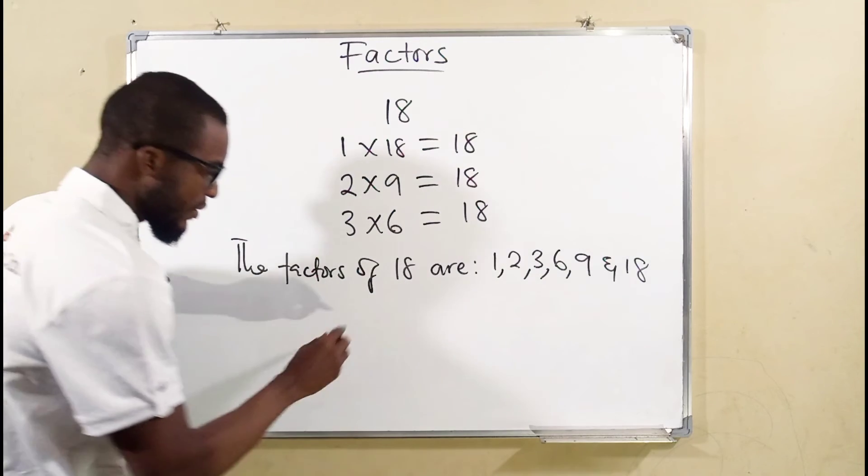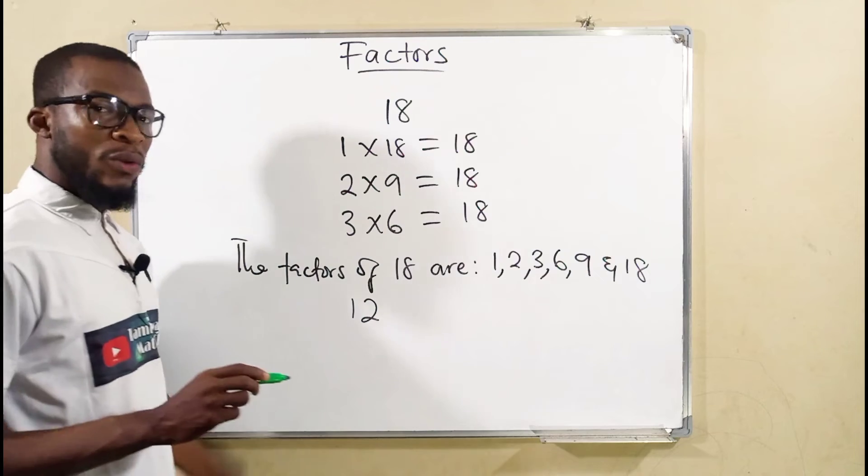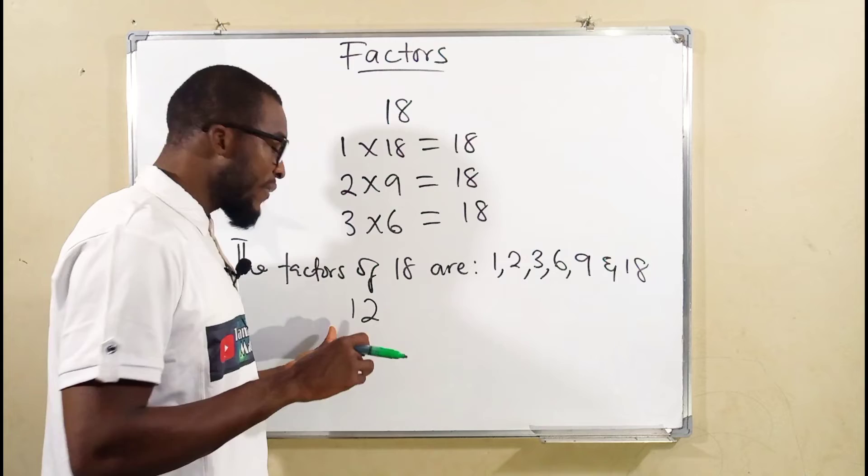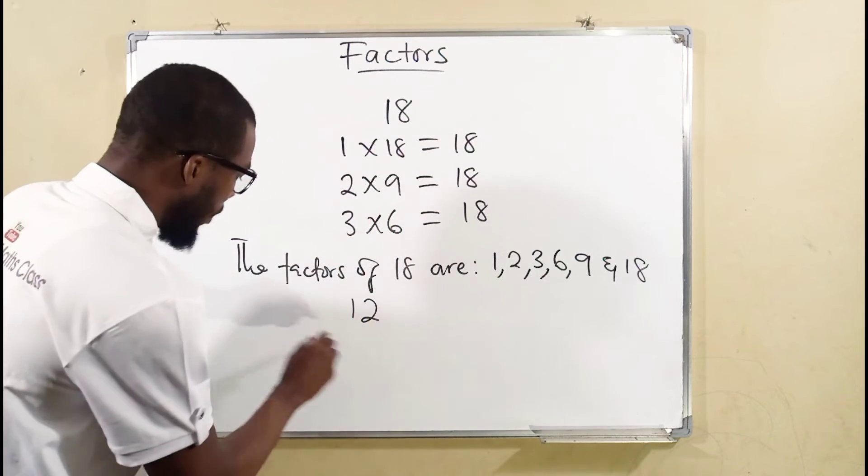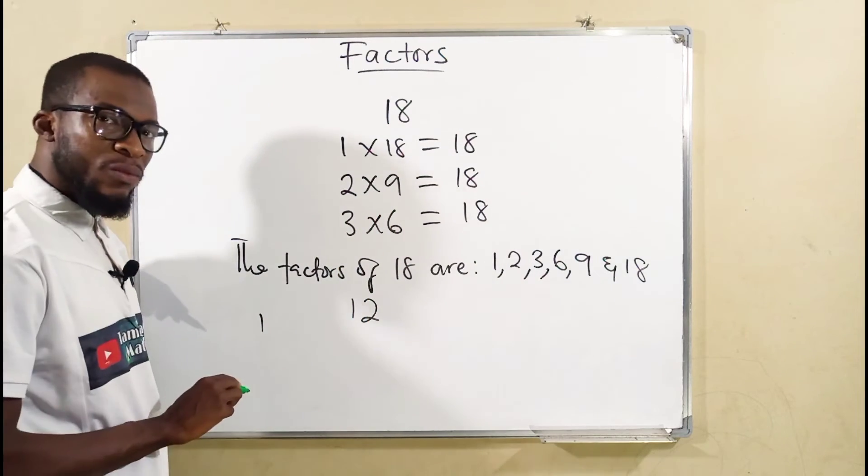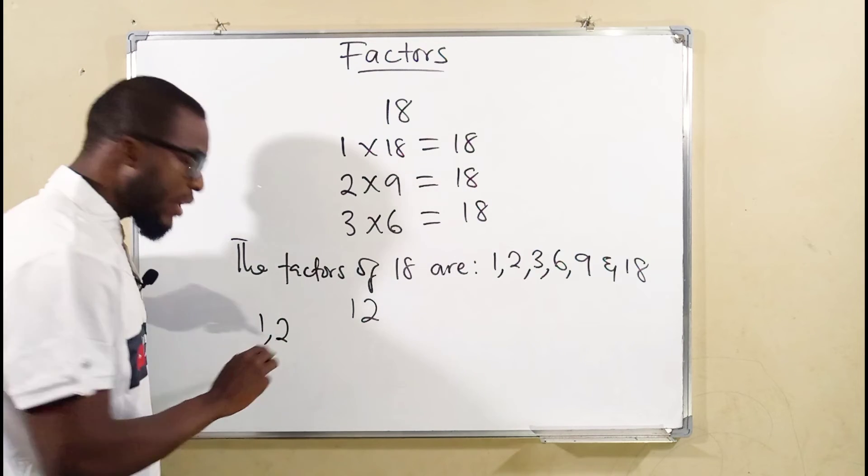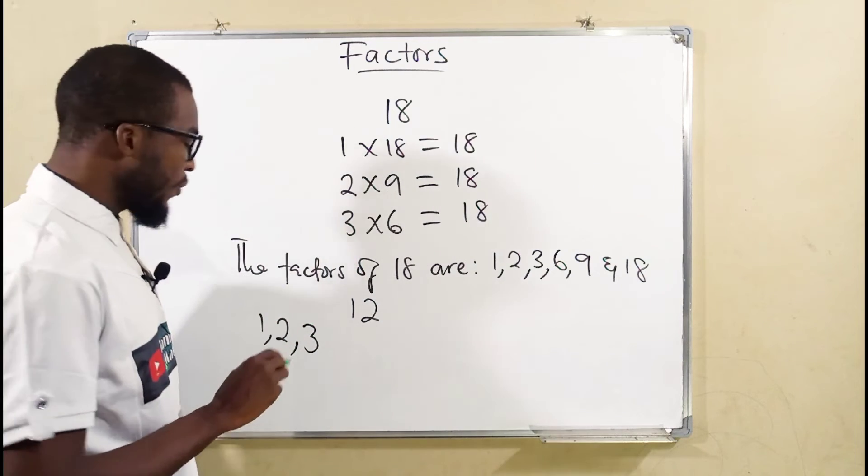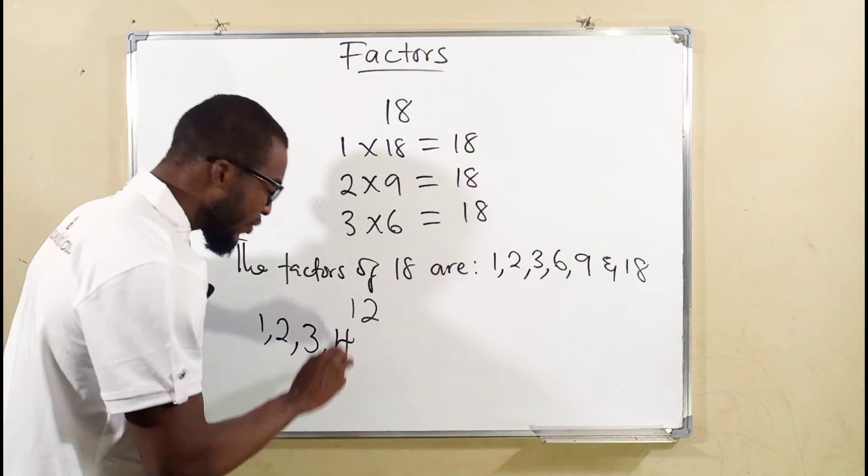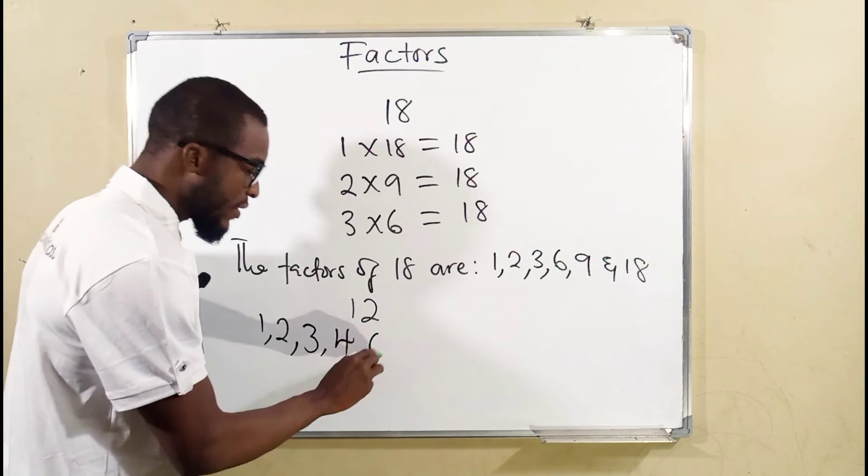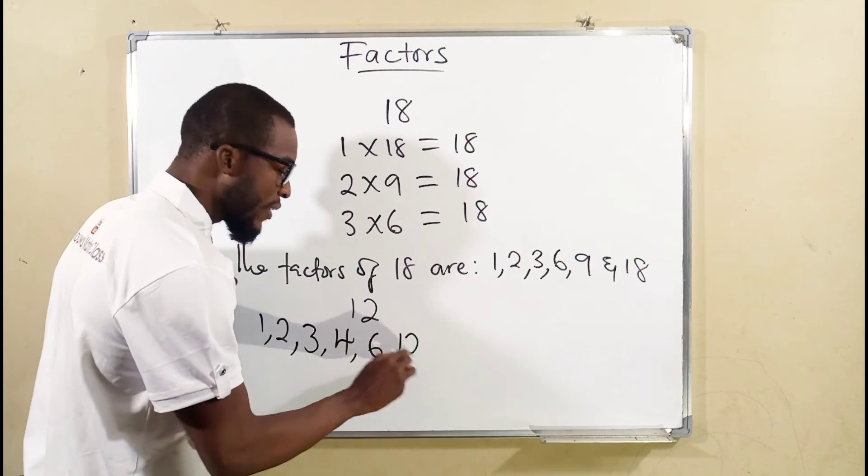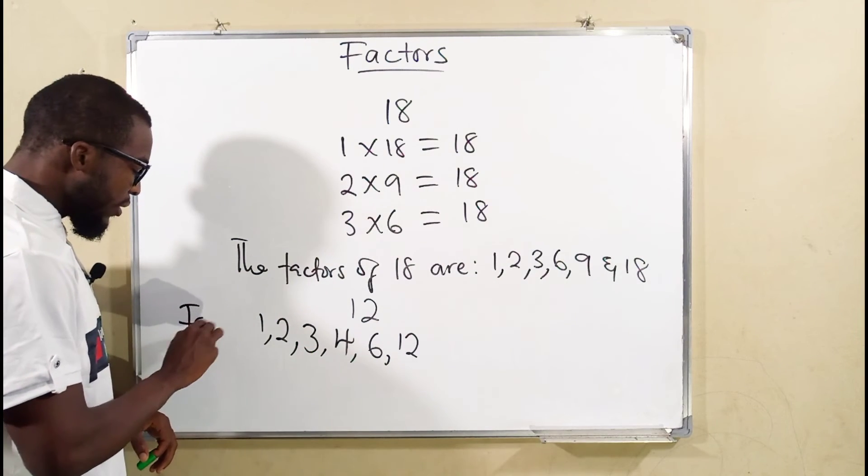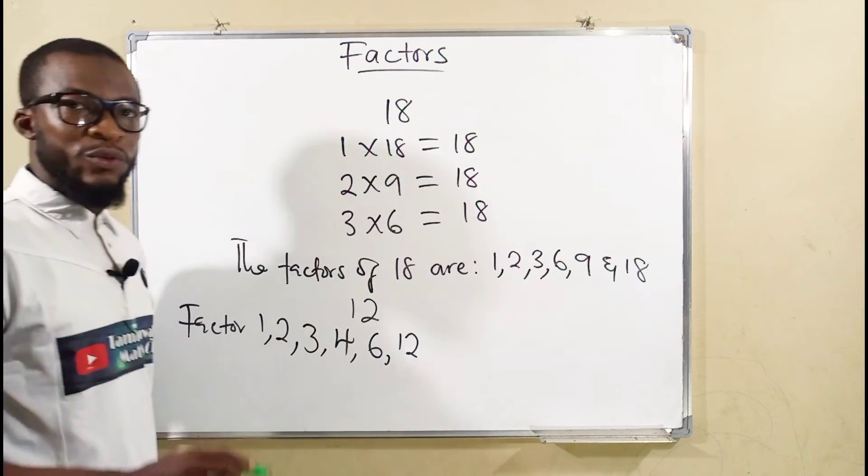Take for instance, if we say 12, all those numbers that can go into 12 without remainder, we say they are the factors of 12. I know 1 can go there without remainder, 2 can go there 6 times without remainder, 3 can go into 12 4 times without remainder, 4 can go 3 times, 6 can go 2 times, and 12 itself can go into 12 without remainder. So all these numbers are factors of 12.